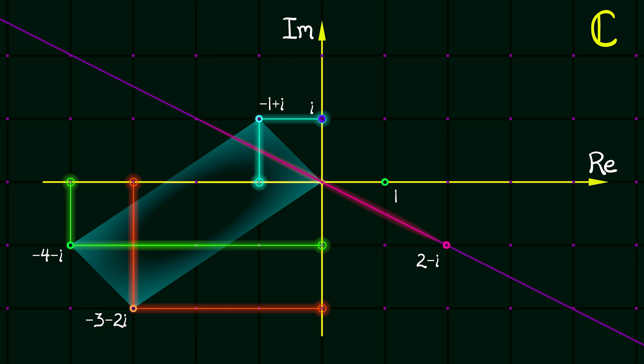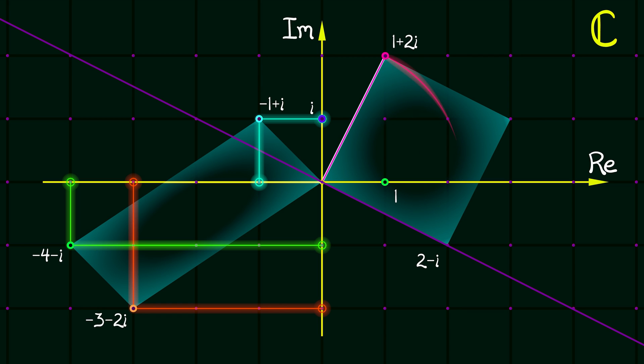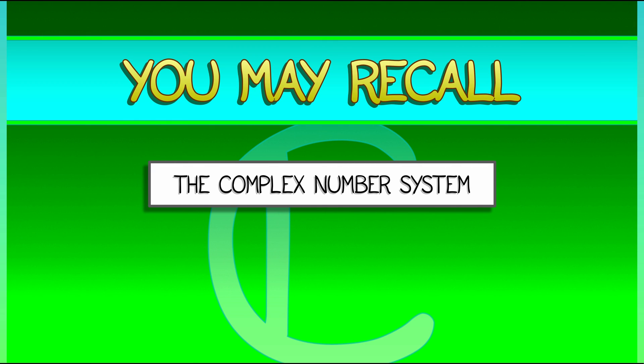If you multiply a complex number by the imaginary unit i, it has the effect of rotating this point in the plane by 90 degrees counterclockwise. Okay, that's the complex numbers.